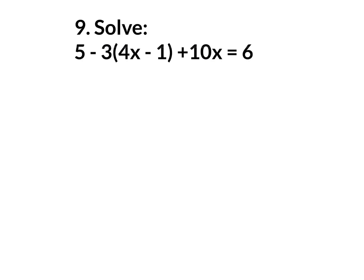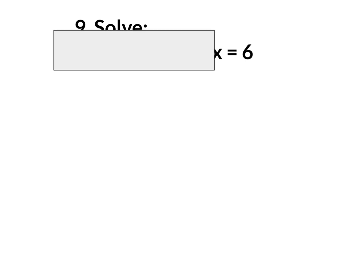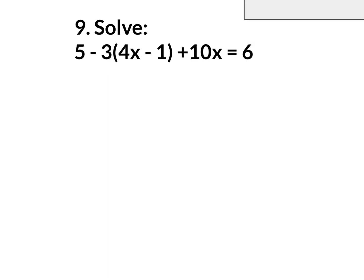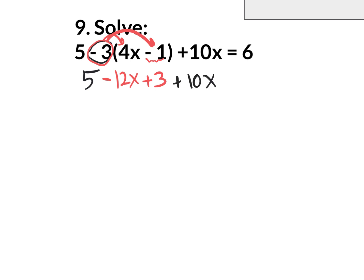On the next one, simplify each side. The right side is already a nice simple 6. On the left side, we do have distributive property — distribute the minus 3: negative 3 times positive 4x is minus 12x, and negative 3 times negative 1 is positive 3. After distributing, bring everything down: that 5 comes down, and the plus 10x comes down. Then combine like terms — negative 12x combined with positive 10x.